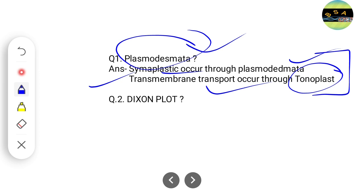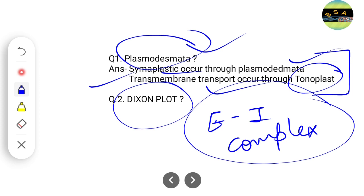One question came from Dixon plot. What is this plot? Basically, this plot is mainly used to measure enzyme inhibition with dissociation constant in enzyme-inhibitor complex.